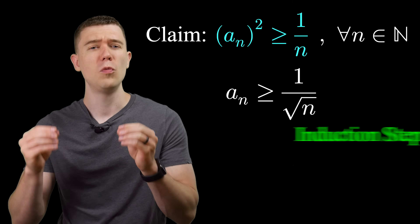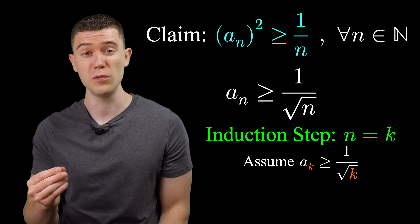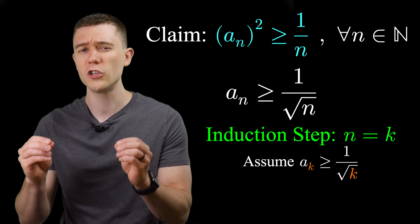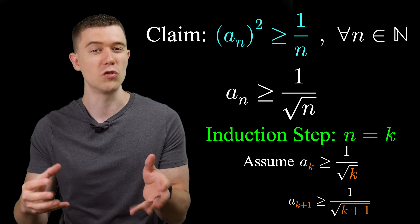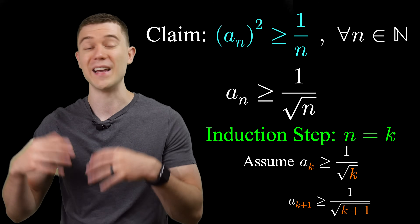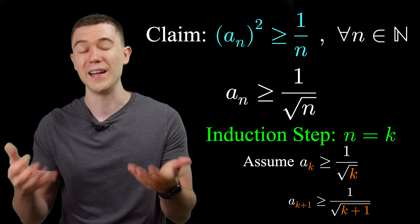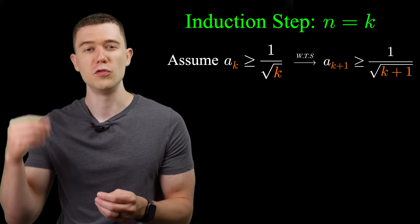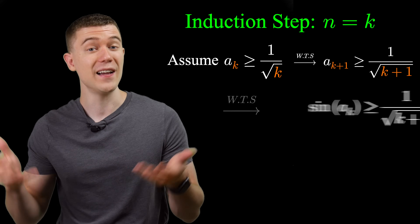Now for the induction step. We assume it's true for n equals k — that is, a sub k is greater than or equal to 1 over the square root of k. We want to show it's true for n equals k plus 1: a sub k plus 1 is greater than or equal to 1 over the square root of k plus 1. We know a sub k plus 1 equals sine of a sub k.